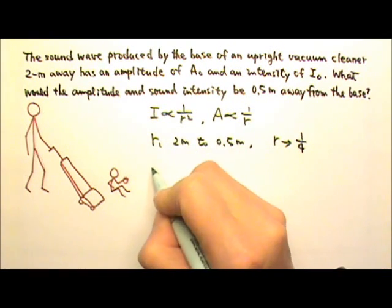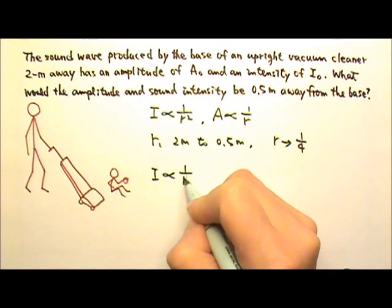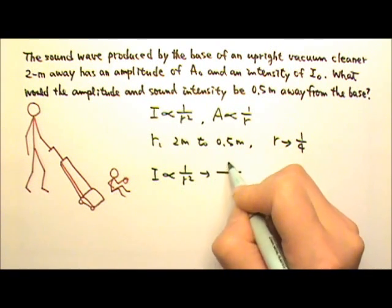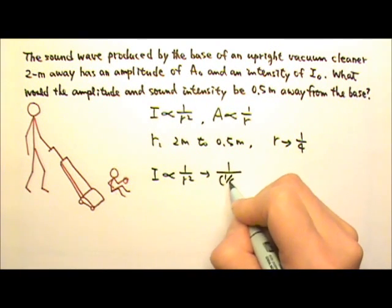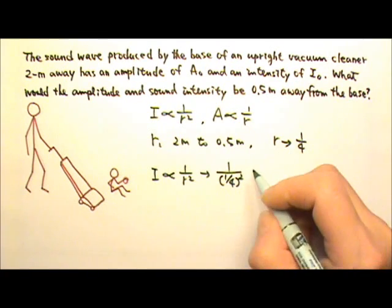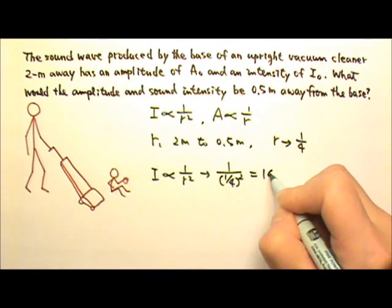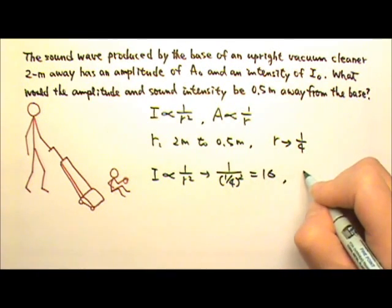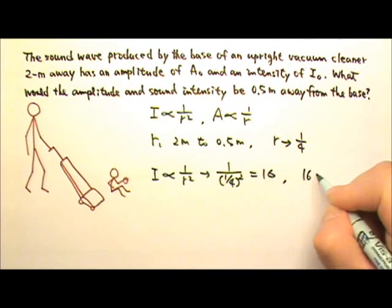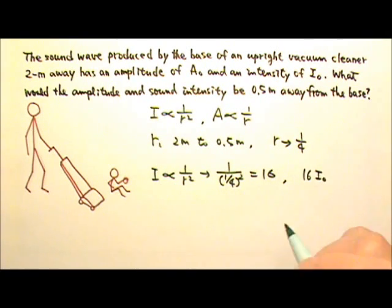So the intensity, which is proportional to 1 over r², changes by a factor of 1 over one fourth squared, which is 16. So the intensity the child would hear would be 16 times the I₀. So it's not surprising if a little kid dislikes loud vacuum sound.